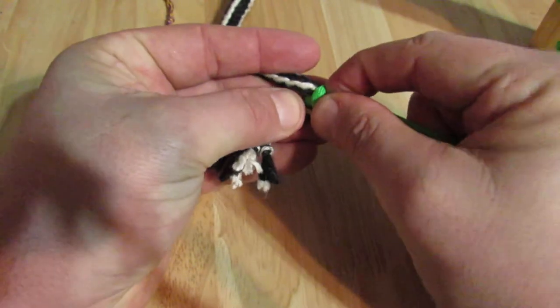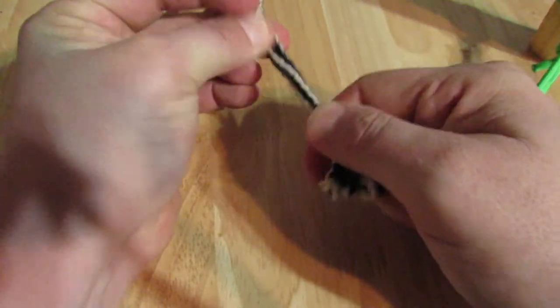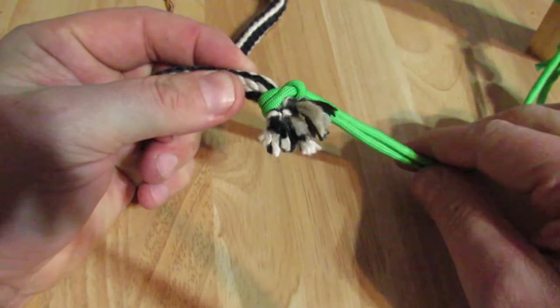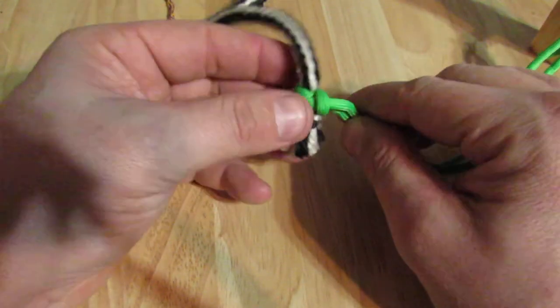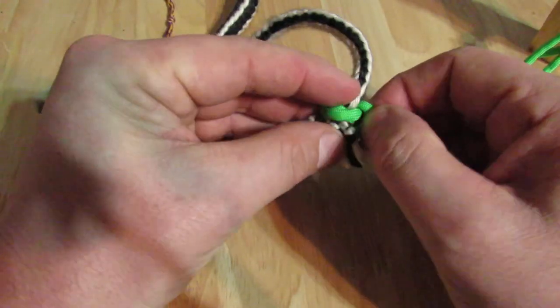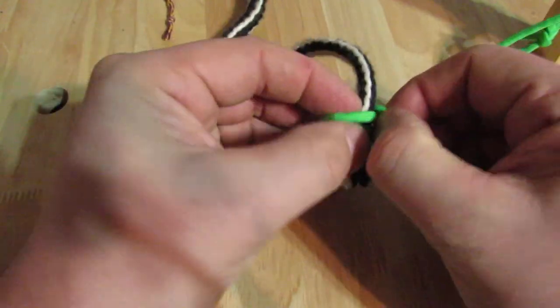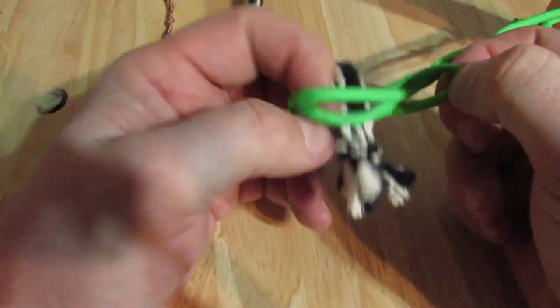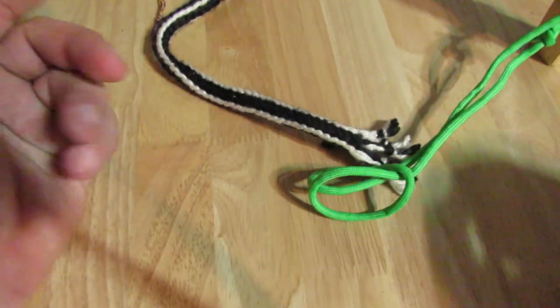And then you just cinch it tight, pull it down to your knot, and there you go. To undo, you just grab it and kind of pull the two apart like that. Thank you.